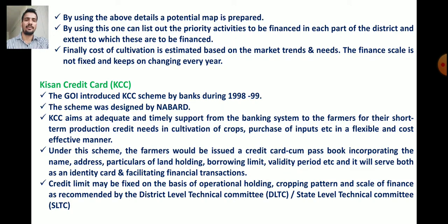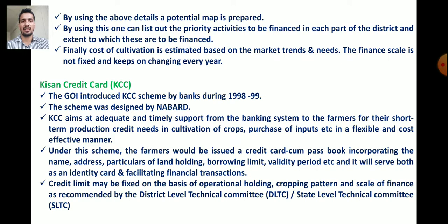Under this scheme, the farmer is issued a Kisan card cum passbook incorporating details such as name, address, particulars of land holding, borrowing limit, validity period, etc. It serves both as an identity card and facilitates financial transactions. The credit limit may be fixed on the basis of operational land holdings, cropping pattern, and scale of finance as recommended by the district level technical committee, DLTC.